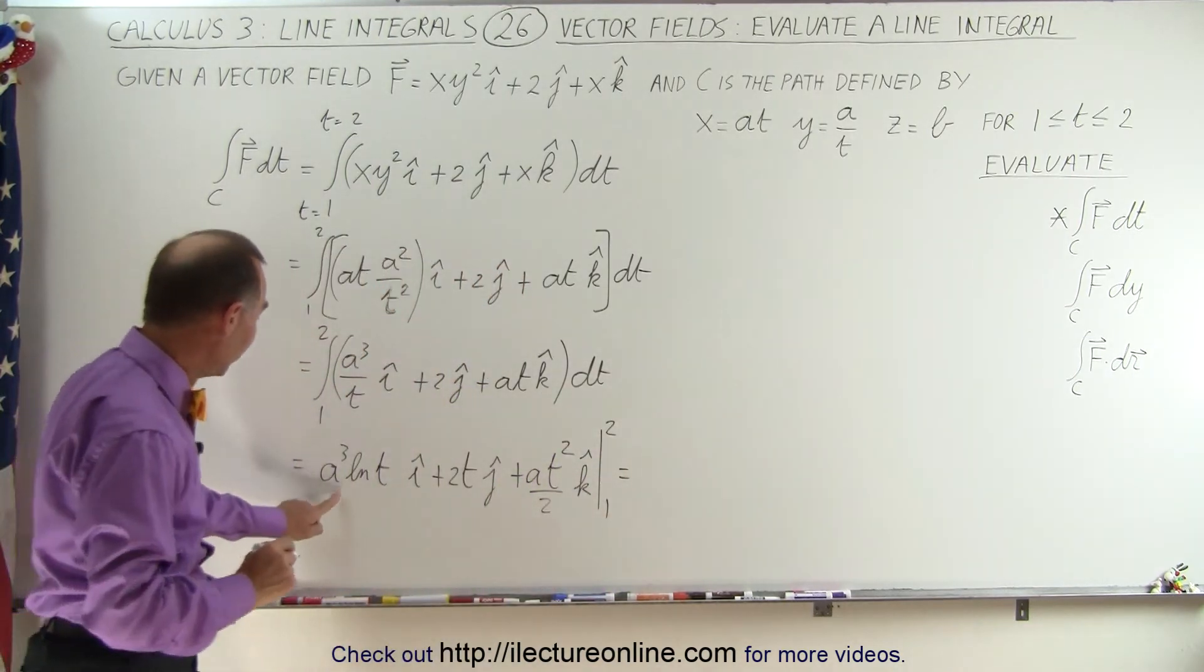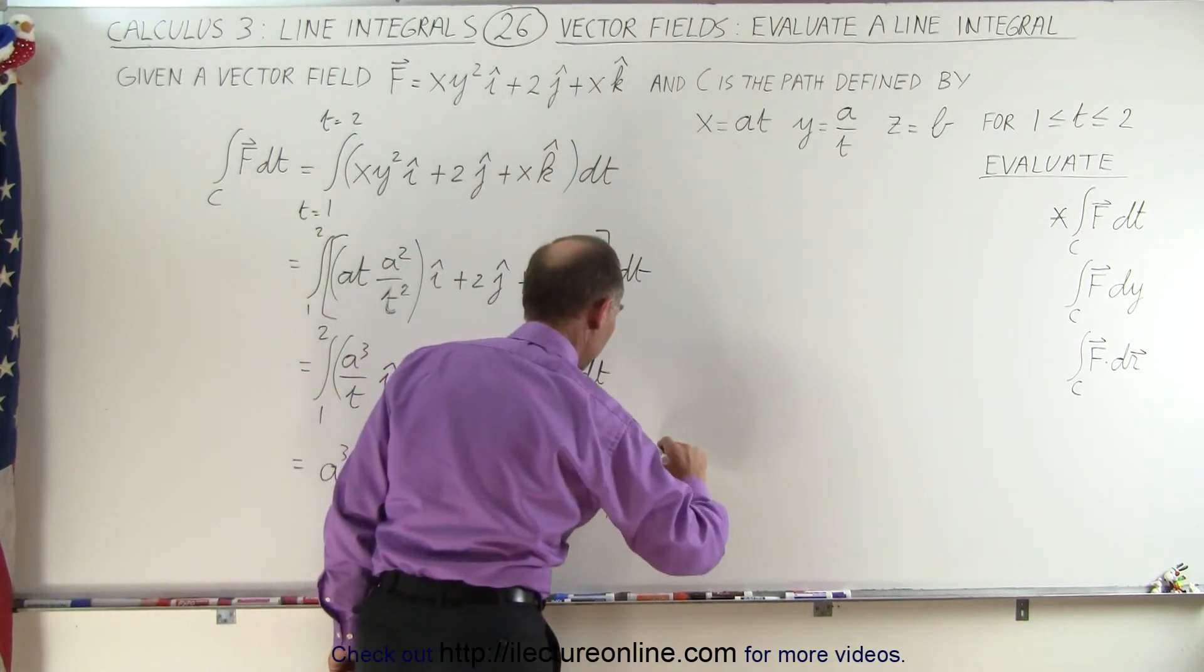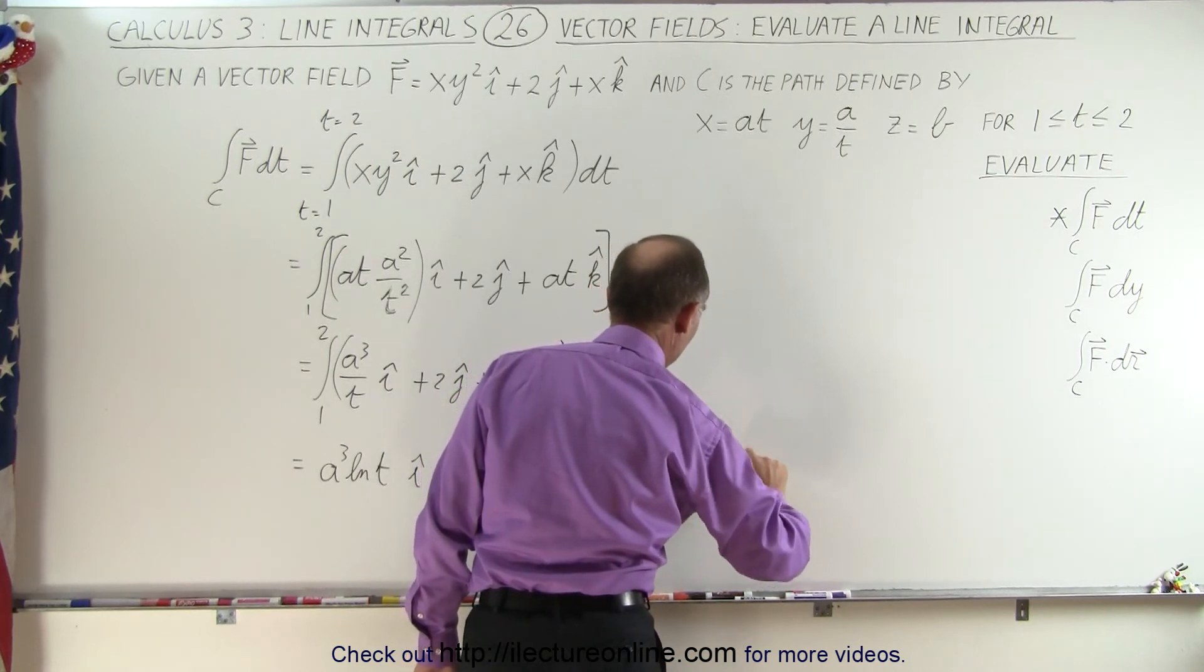So when we plug in the upper limits, we get the following. We get, let's see here, a³ times the natural log of 2 minus the natural log of 1.